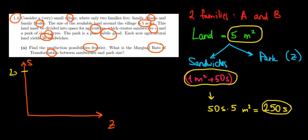That would be the intercept over here, so this would be 250. Now what is the maximum amount of land that we can invest in building the park? Well we could put all the five meter square into the park, so that would be five over here. Now let's connect these two and that's going to be our production possibilities frontier.